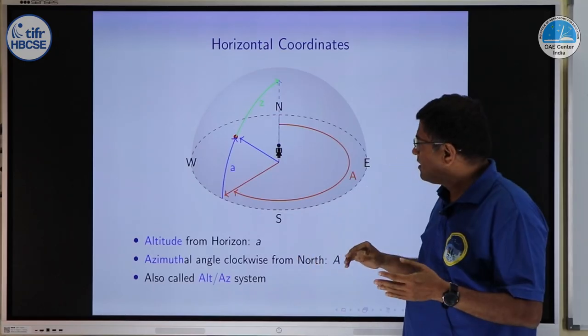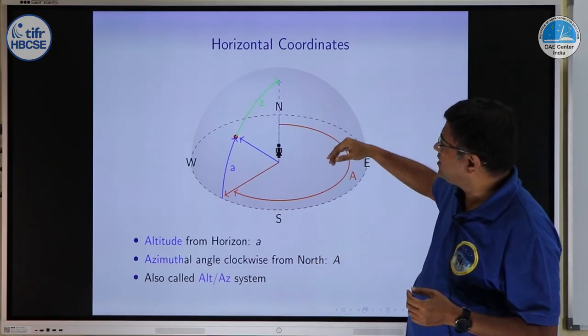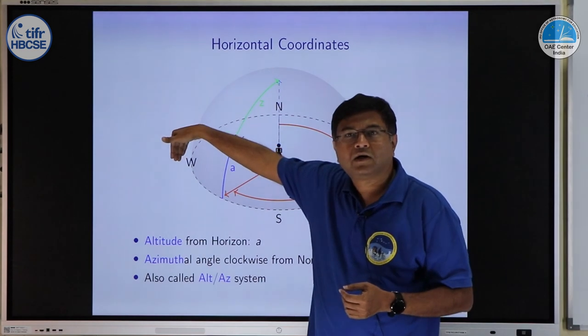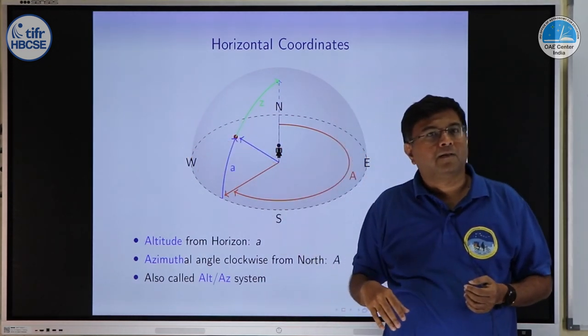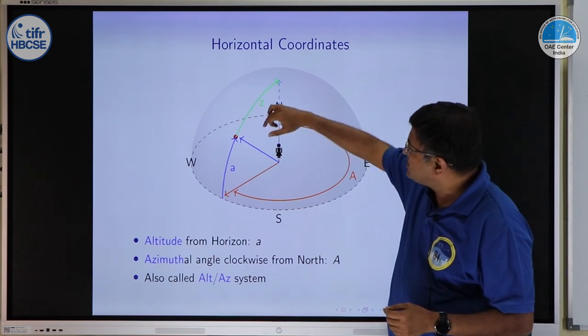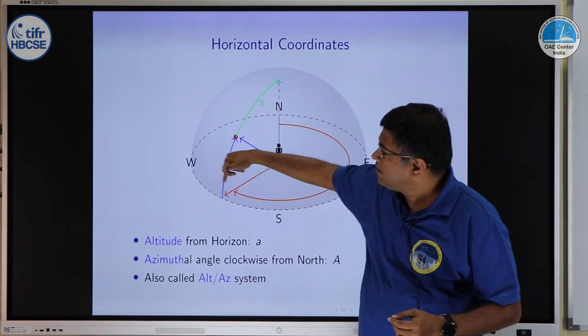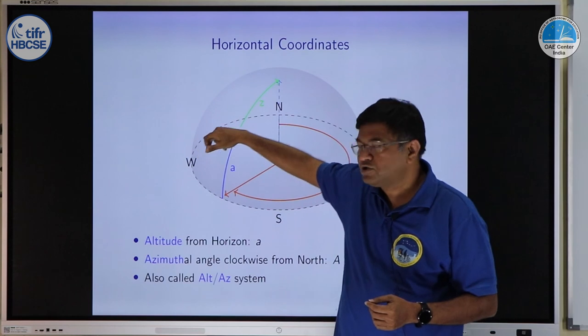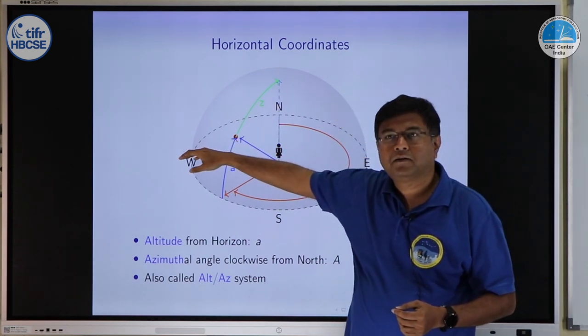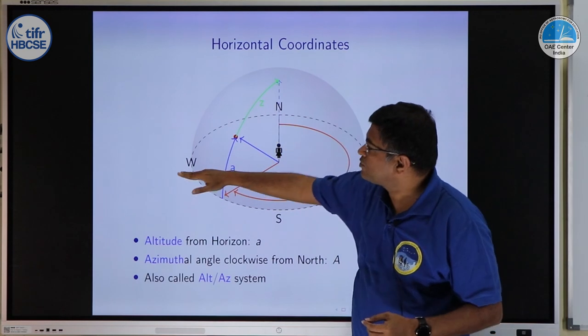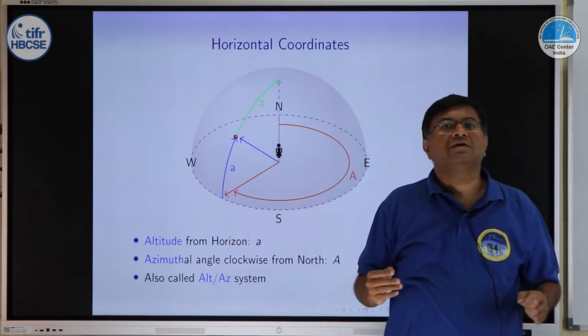Take another example, suppose the star was somewhere exactly on the western side and suppose it is on horizon. Then we will say the azimuth of star would be 270 degrees because you have to go from north towards east, and altitude of the star since it is on horizon will be 0 degrees.